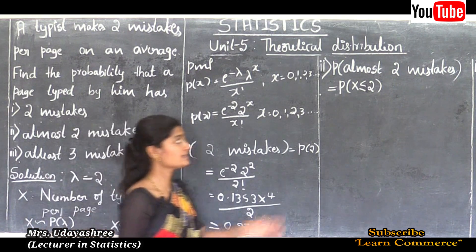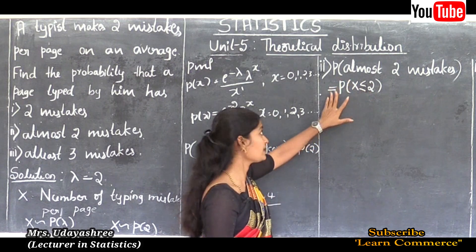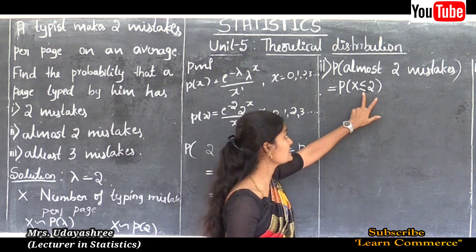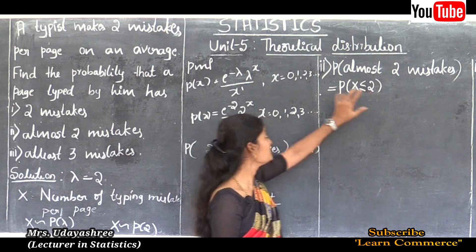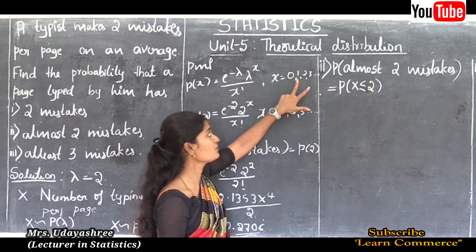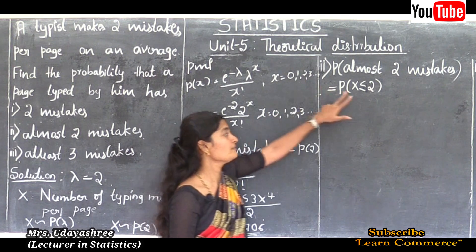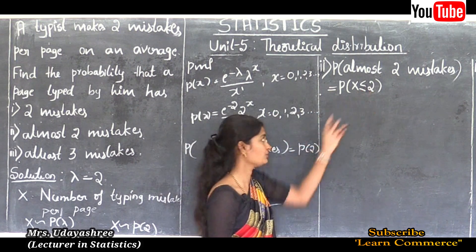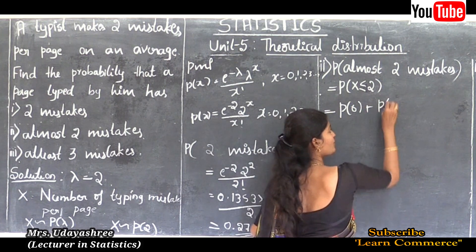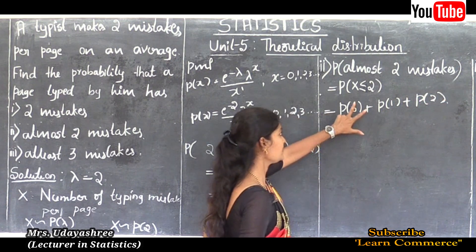For the second sub-question, the probability of at most two mistakes is P(X ≤ 2). Since x is less than or equal to 2, we include x = 0, 1, and 2 from our range. So this equals P(0) + P(1) + P(2).